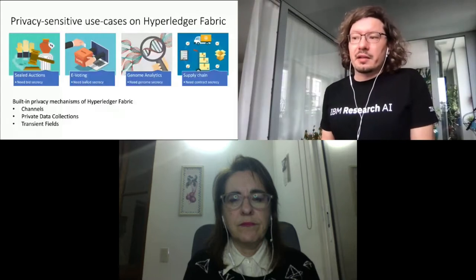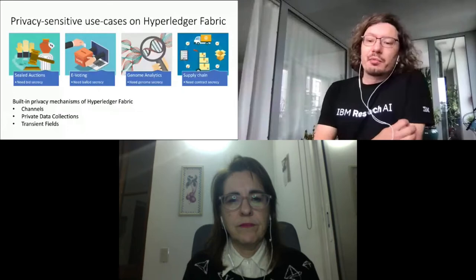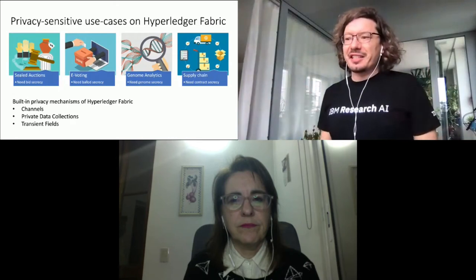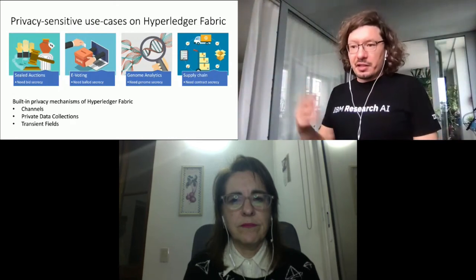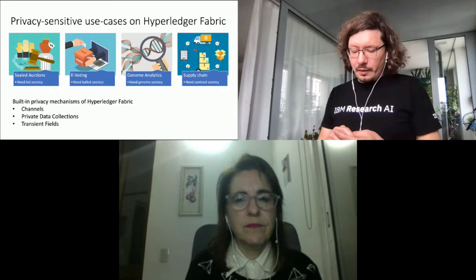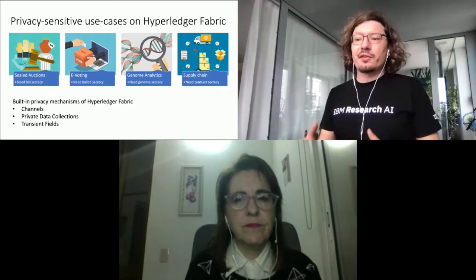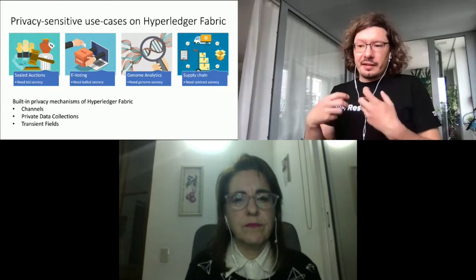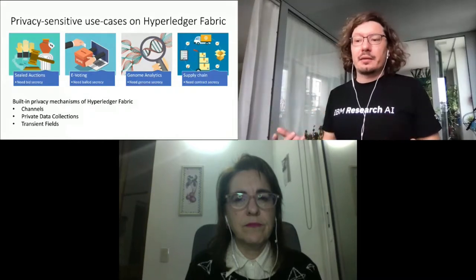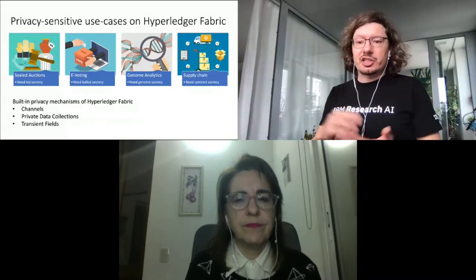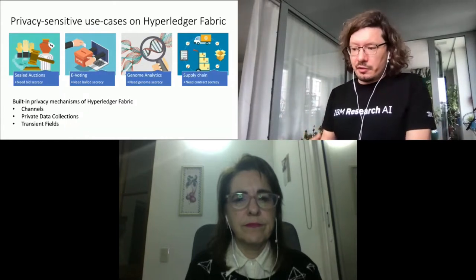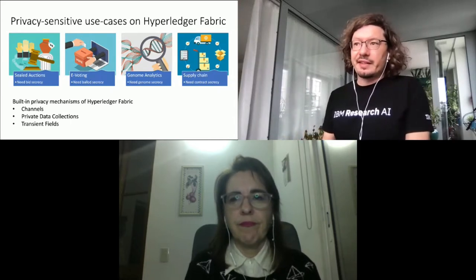There are already some privacy mechanisms available with Hyperledger Fabric. For instance, we have Channels, which allows us to split our blockchain into multiple blockchains and thereby separate the participants. But there are also private data collections which help us to partition data access, or we can submit data as part of a transient field of a transaction, which in the end does not end up as part of the transaction on the blockchain. Those mechanisms already allow us to cover a broad range of privacy-sensitive use cases.